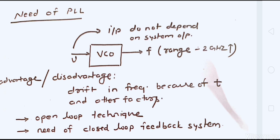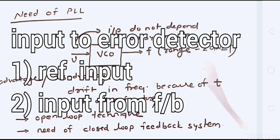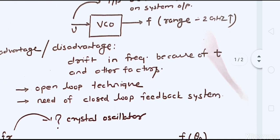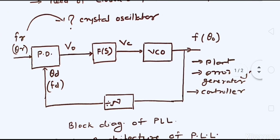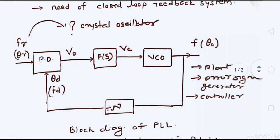You need a proper input to the controller, which comes from an error detector. The error detector, being the first block of a closed-loop system, takes input from a reference input — which is your required output of the system — and the second input to the error detector is your feedback input from the feedback loop itself.